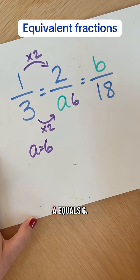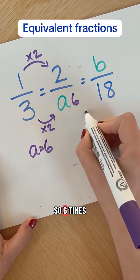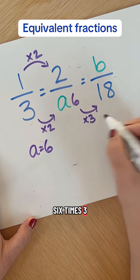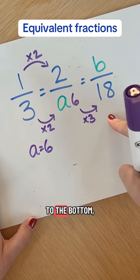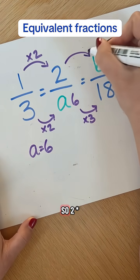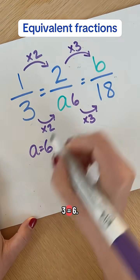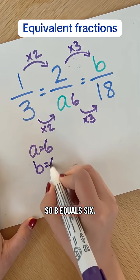Now we know A equals 6. So 6 times something is 18. 6 times 3 is 18. And whatever you do to the bottom, you must also do to the top. So 2 times 3 equals 6. So B equals 6.